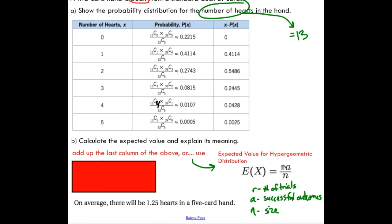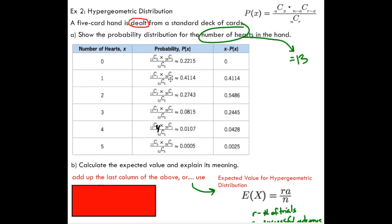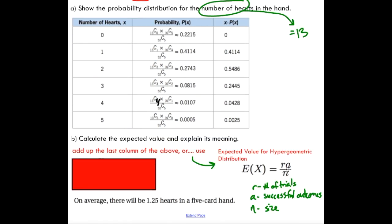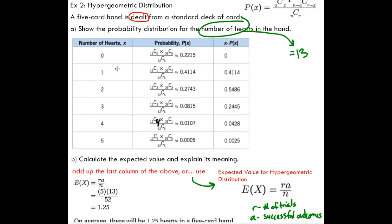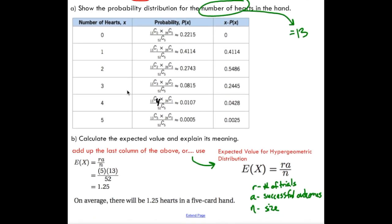So in this formula, r is your number of trials, a is your successful outcomes and n is the size. In this case, the size is the size of our deck. So we have 52 on the bottom. R is the number of trials. For us, it's a five card hand. So we're dealing five cards. It's five trials. And there are 13 successful outcomes possible because there's 13 hearts in the deck. You sub in all these numbers into this formula and on average, there'll be 1.25 hearts in a five card hand. Remember, we don't round for expected value. We leave that as a decimal.